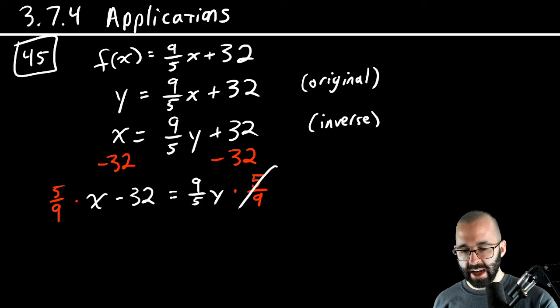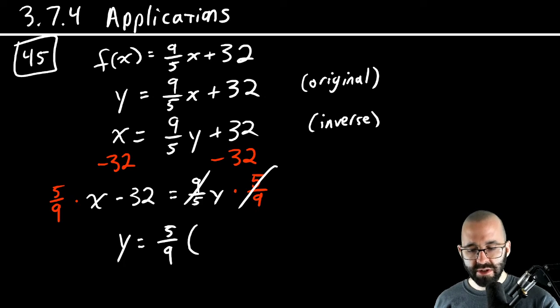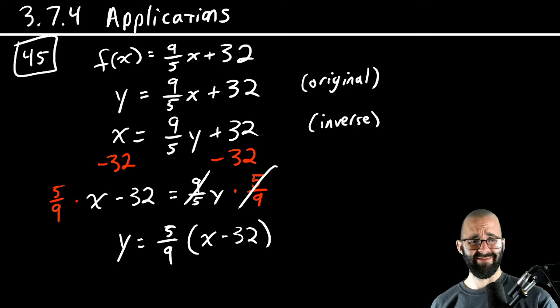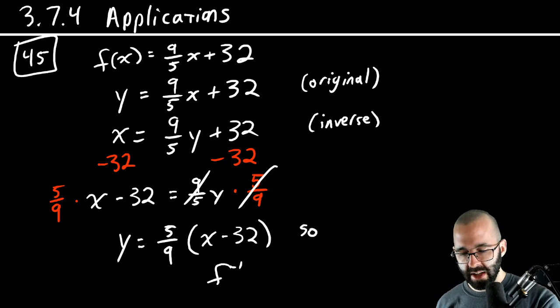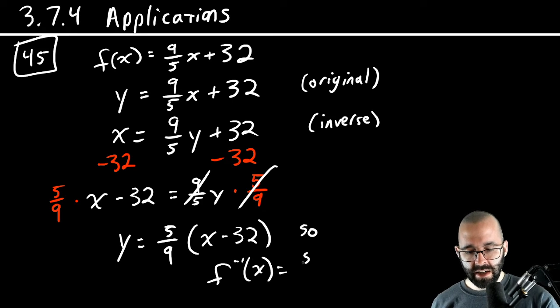And we're going to get that they cancel on this side. We're going to get y equals 5/9, we usually use parentheses but you don't have to. So our inverse function is 5/9 times x minus 32.